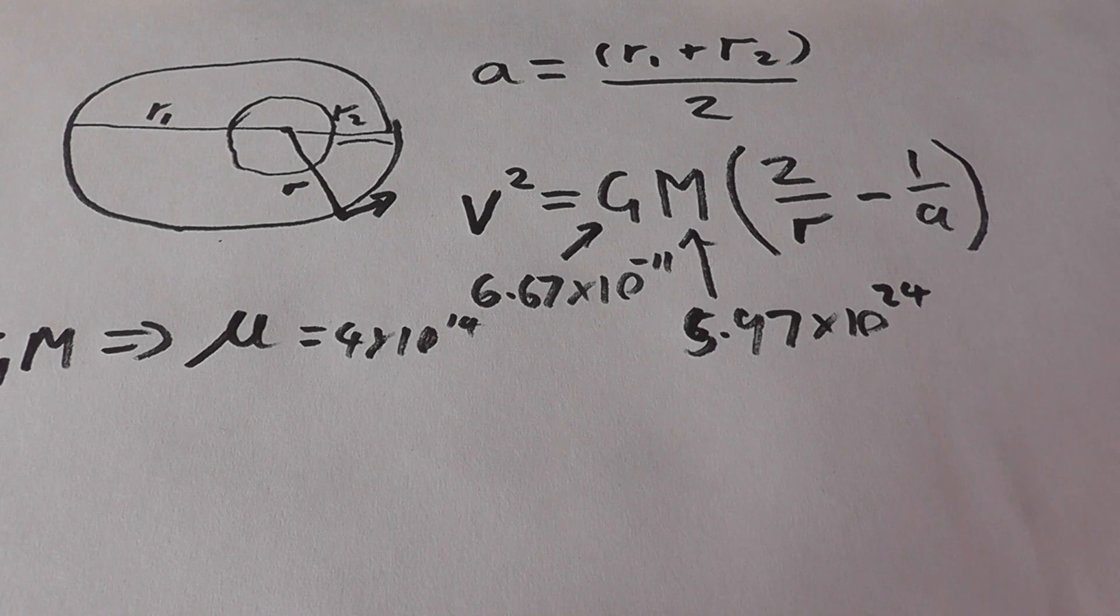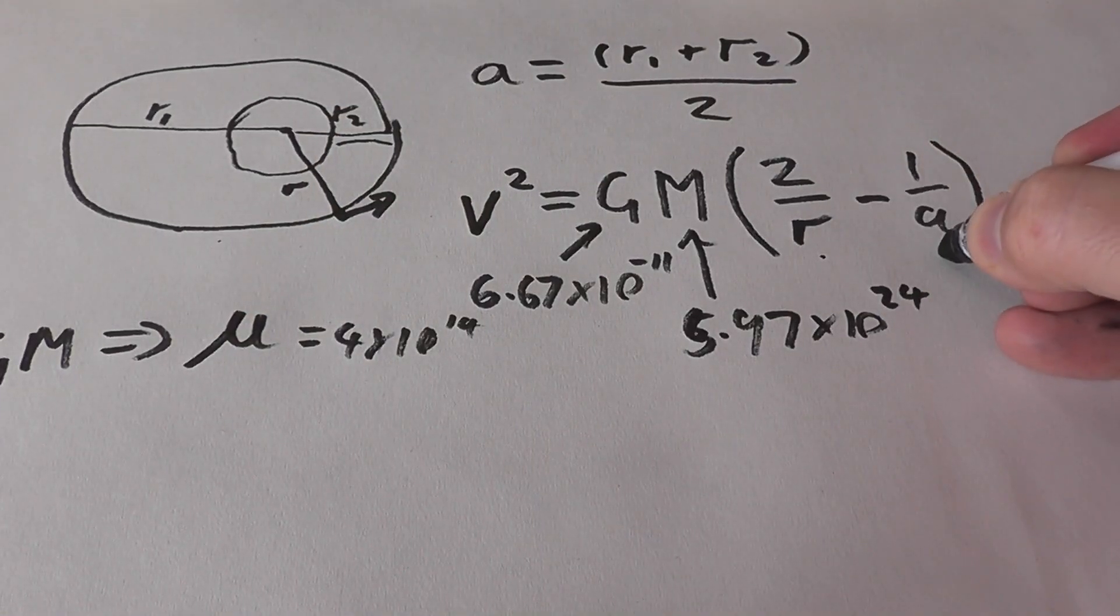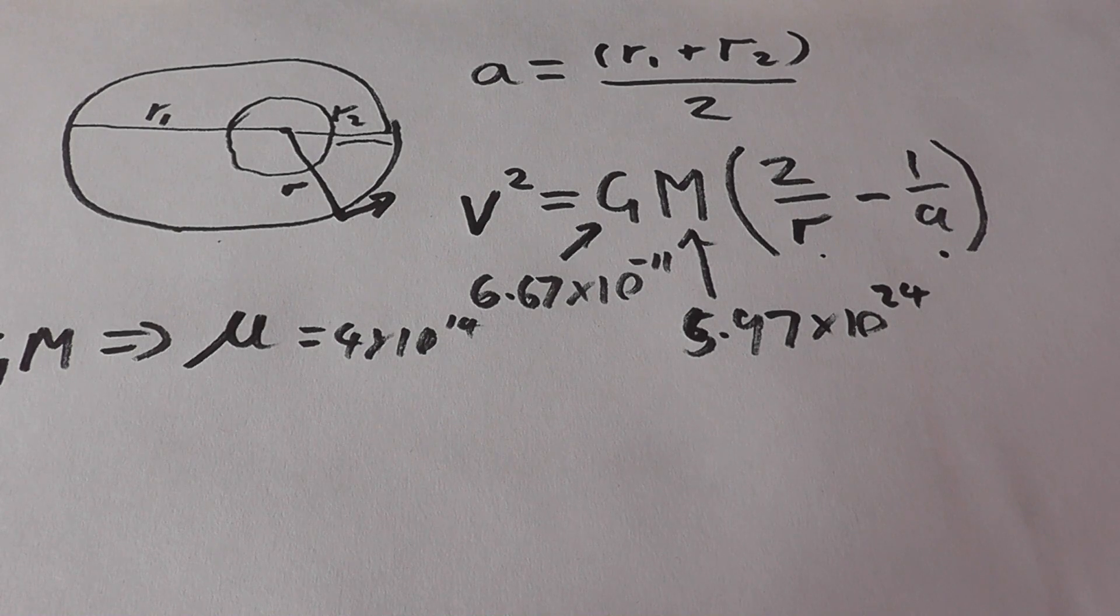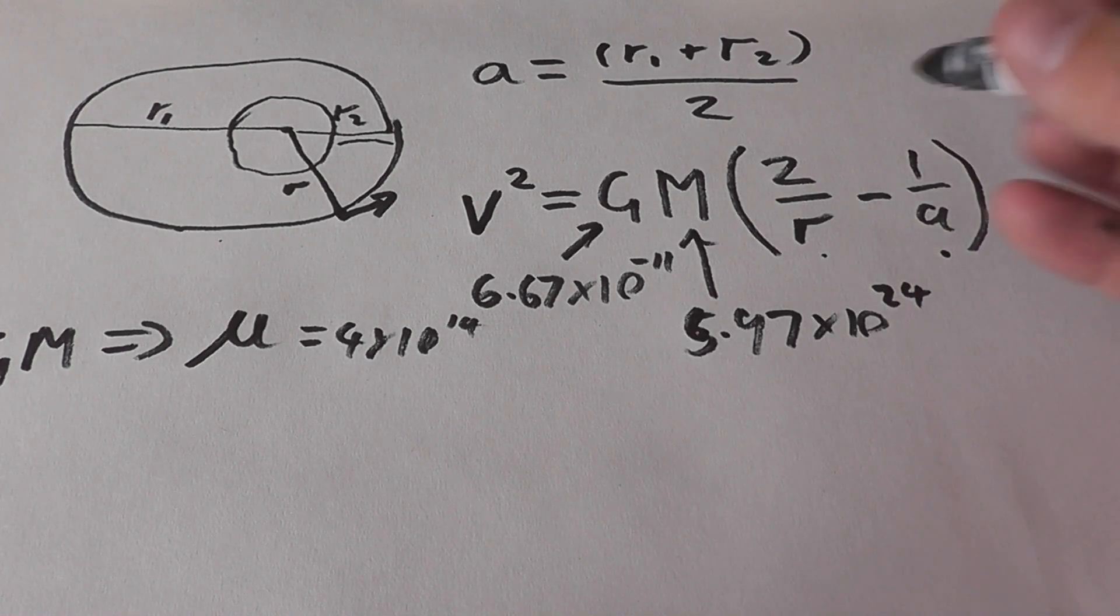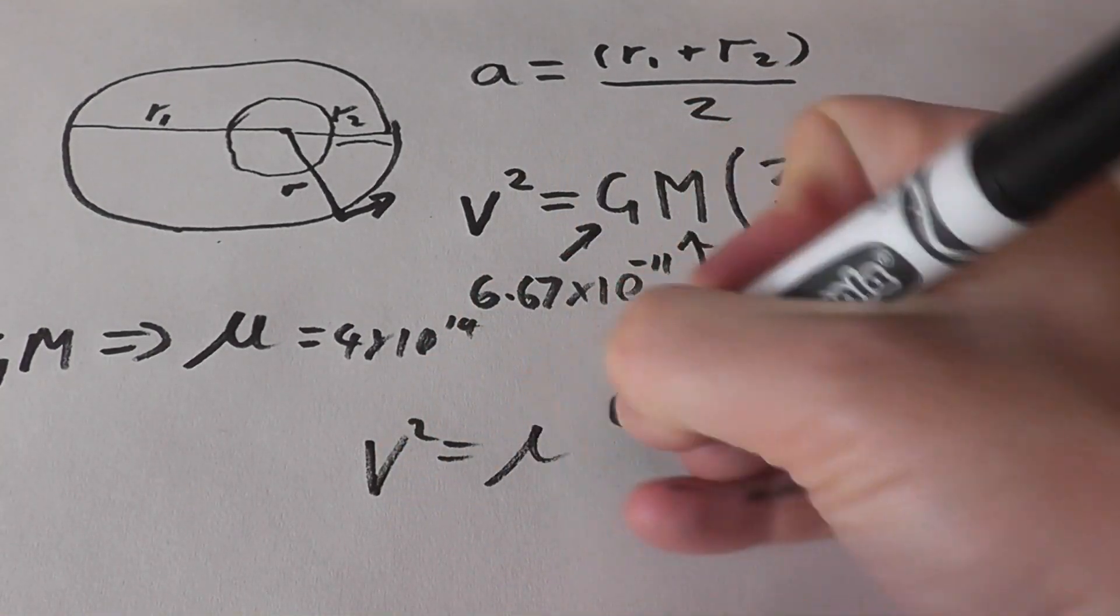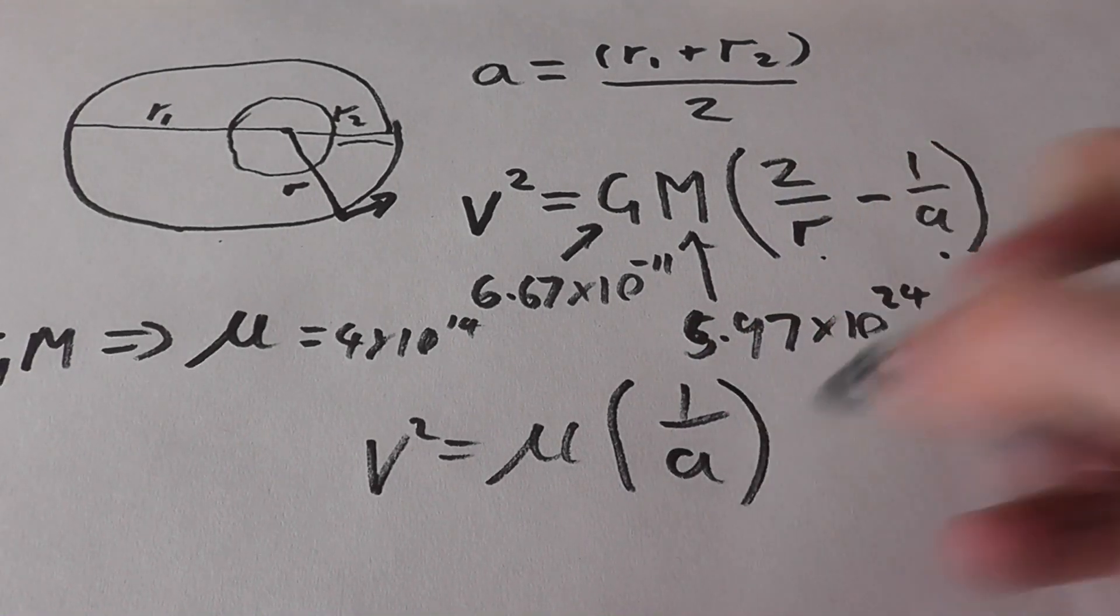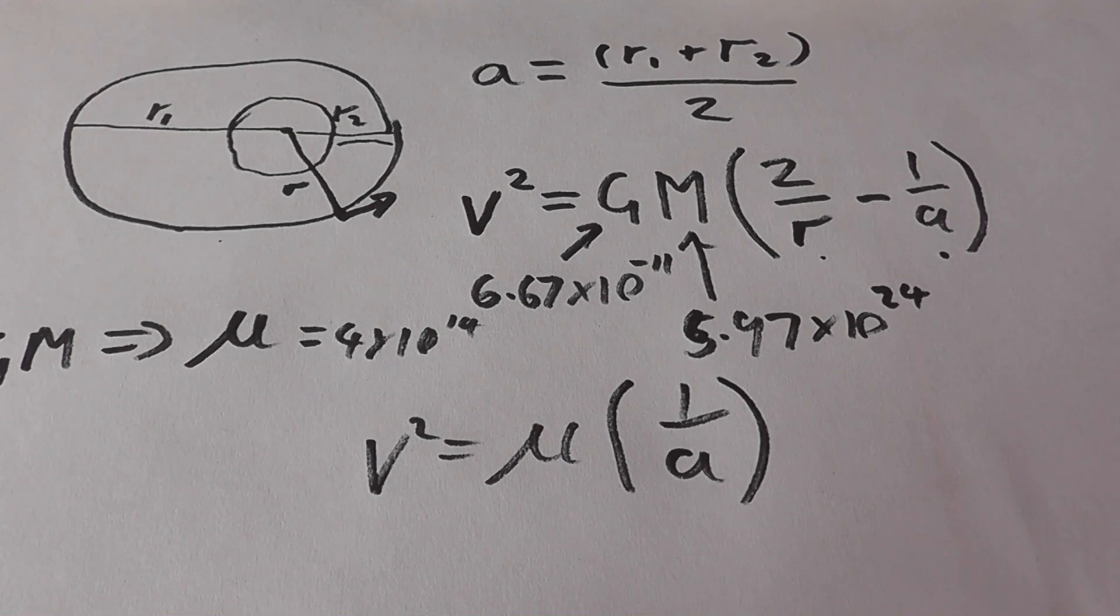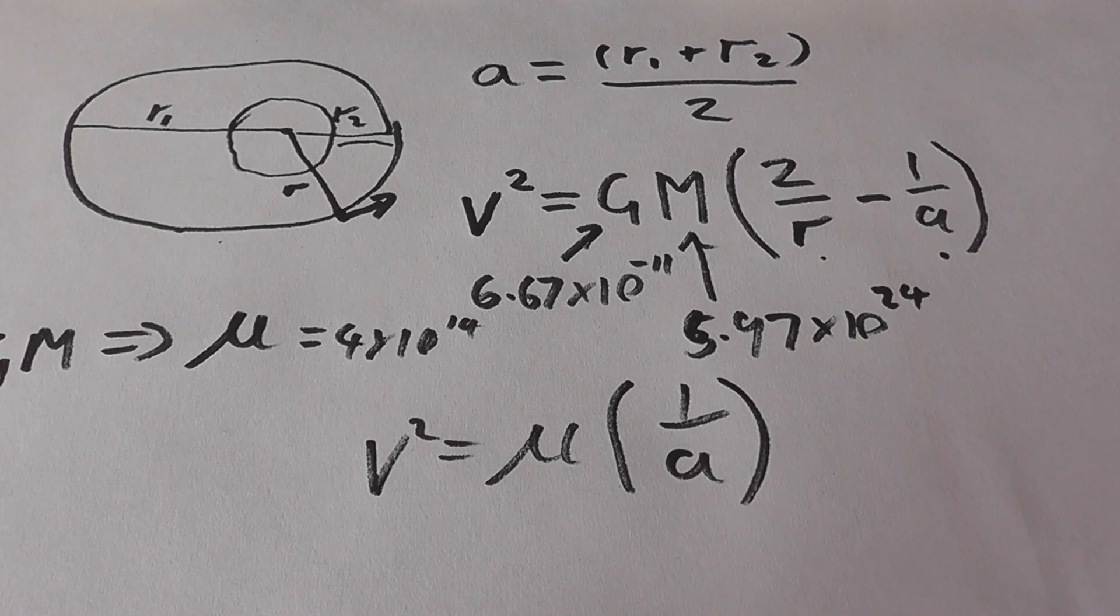So let's apply this to a real-world problem. Let's start out with a simple observation. What happens when r is equal to a? What happens when you have an object which is in a circular orbit, and a is equal to r at all times? Well, of course, this becomes V squared is equal to mu times 1 over a. It becomes incredibly simple.